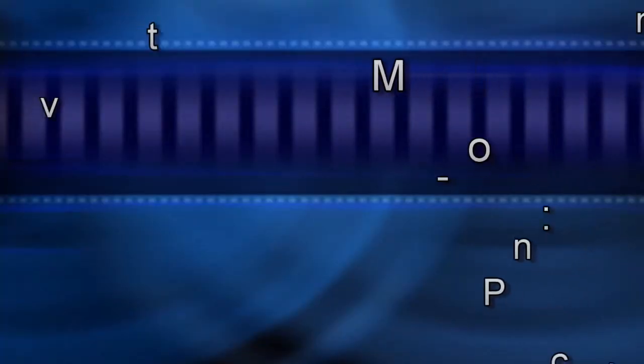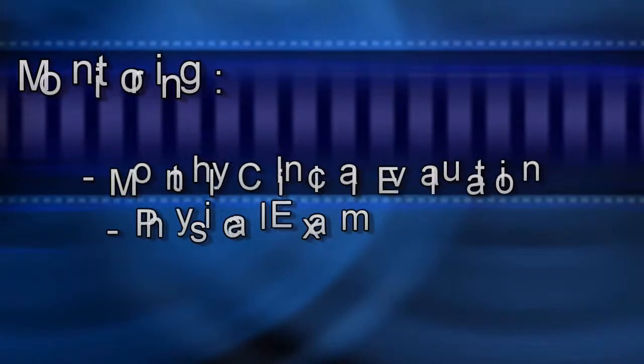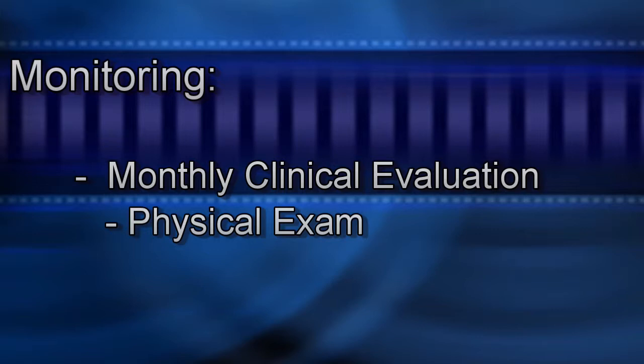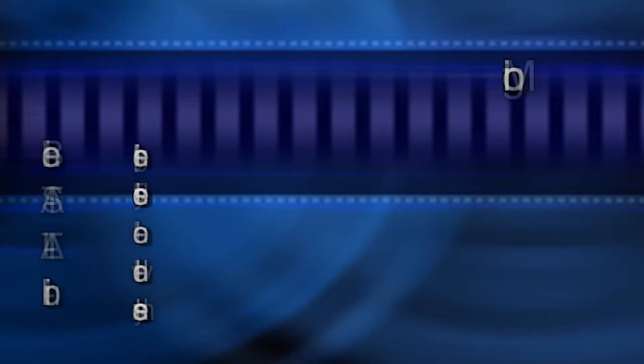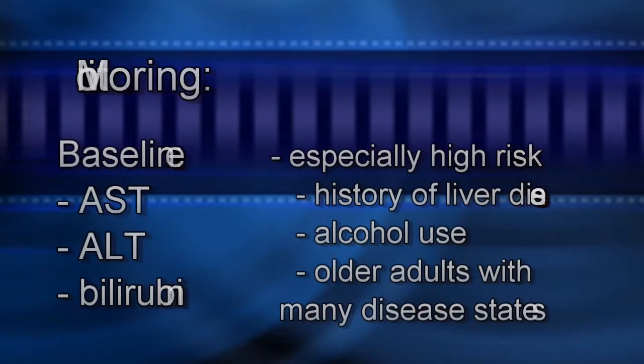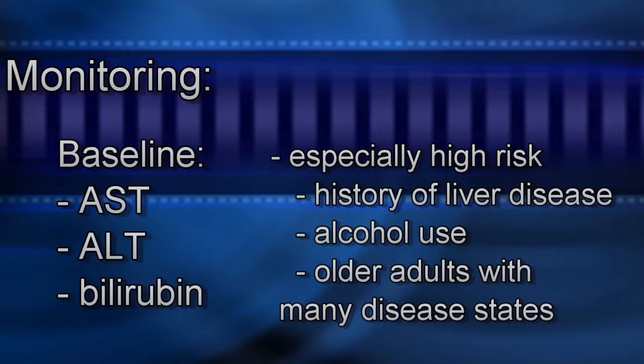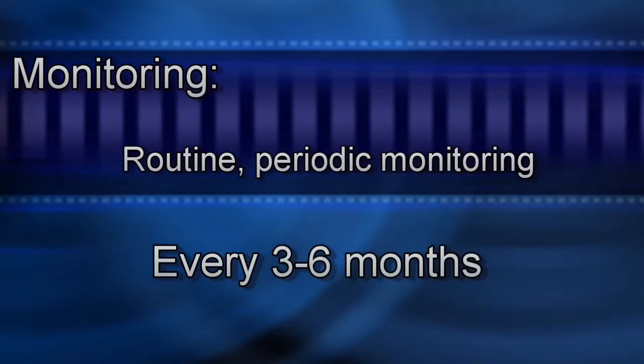So what type of monitoring should be practiced to decrease the incidence of isoniazid-induced liver injury? Monitoring includes a monthly clinical evaluation, including a brief physical exam to assess for developing adverse events. Baseline serum AST, ALT, and bilirubin should be obtained, especially in high-risk patients — for example, those with a history of liver disease, alcohol use, or older adults with several disease states. Routine periodic monitoring every three to six months to obtain blood work is recommended for every patient.